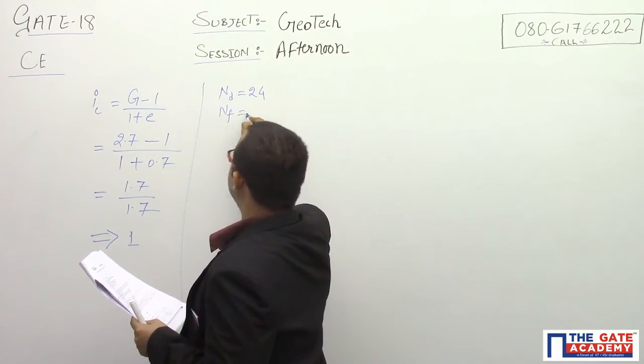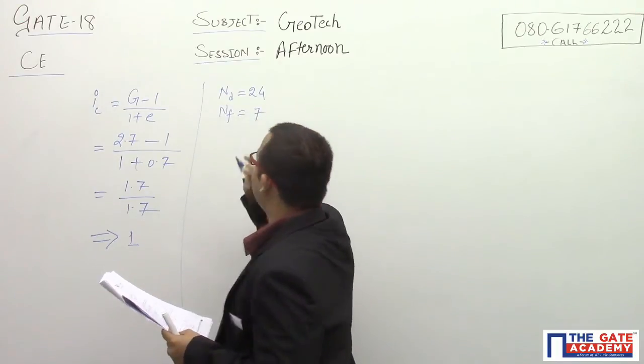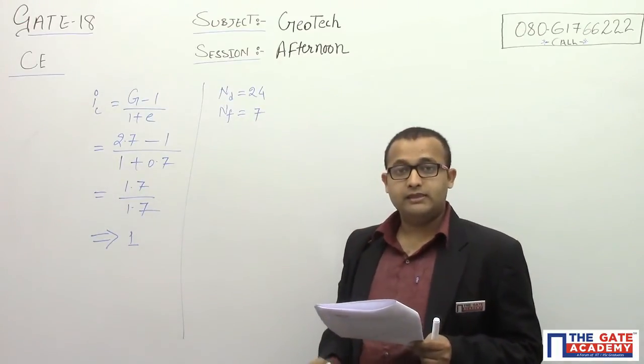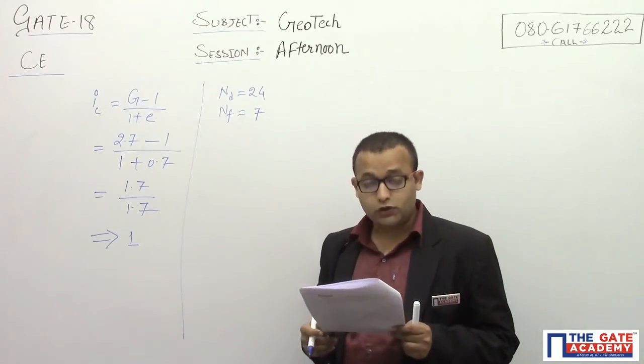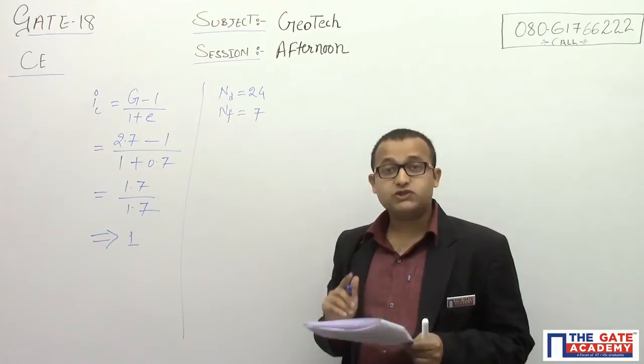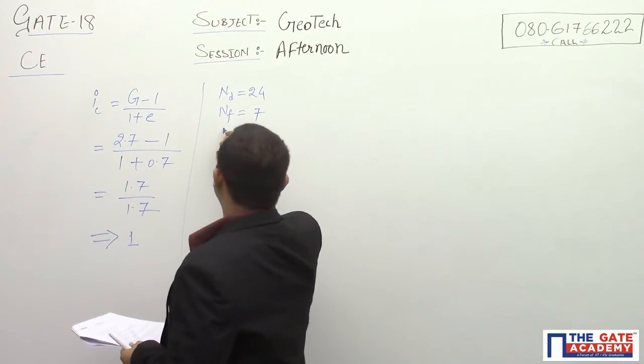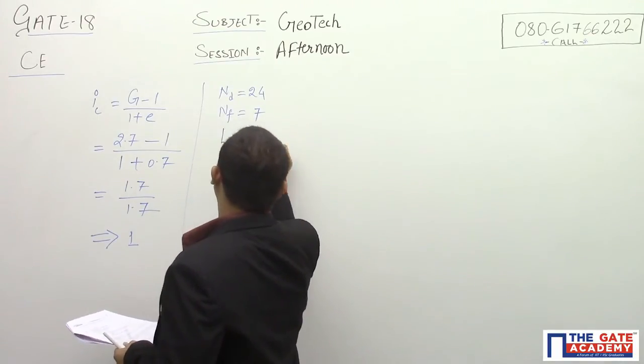24. Number of flow channels 7. The length of flow line adjacent to the toe of the dam at exit is 1 meter, so length of flow line I can write 1 meter.